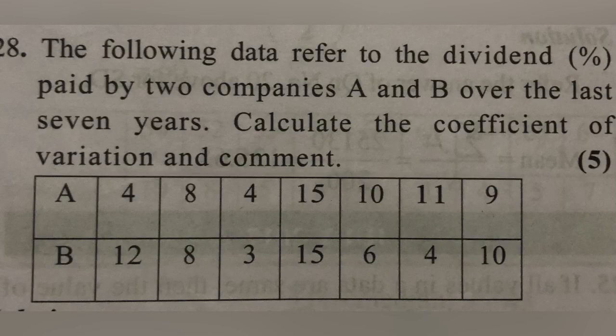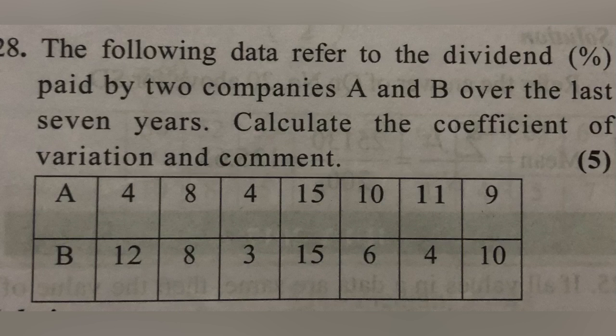The following data refers to the dividend percentage paid by two companies A and B over the last seven years. Calculate the coefficient of variation and comment. For company A, we find x-bar and sigma from the raw data; similarly for company B. CV equals sigma divided by x-bar.